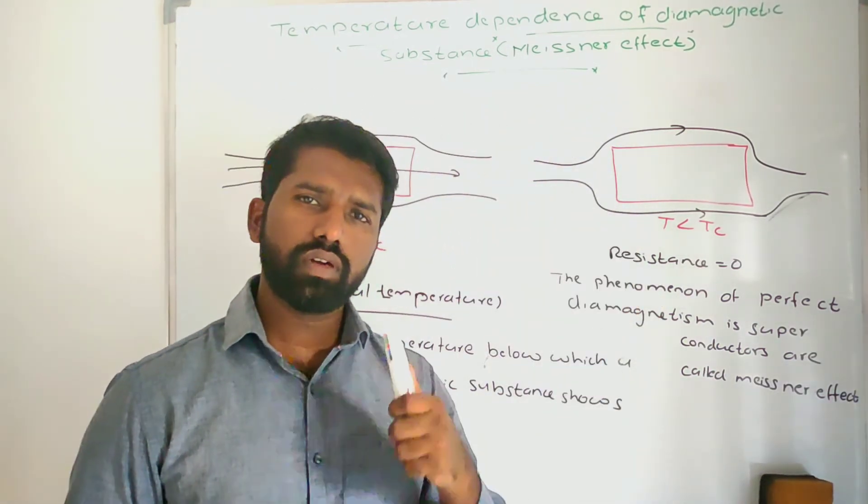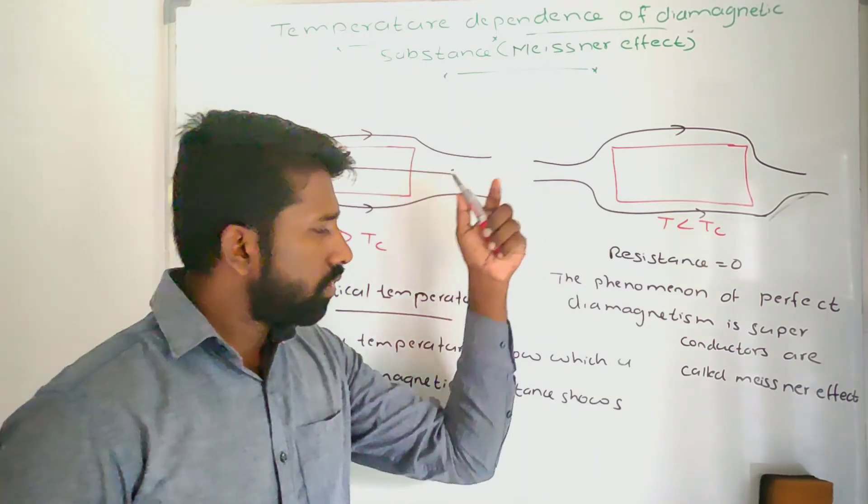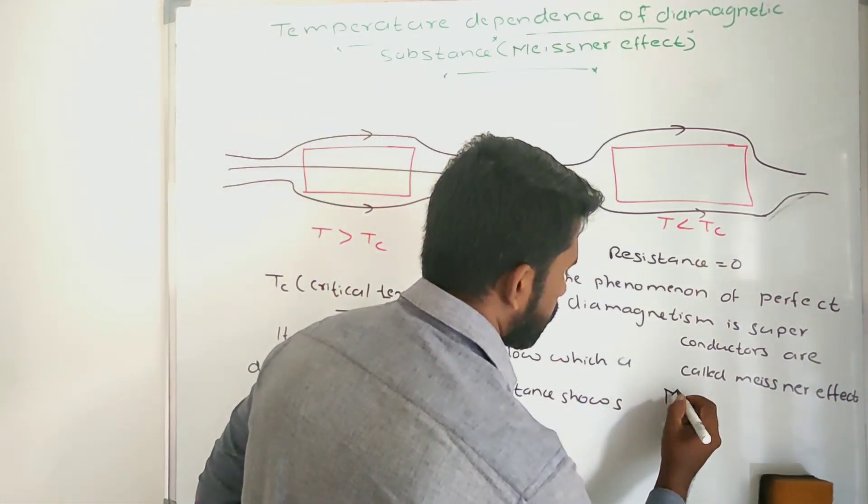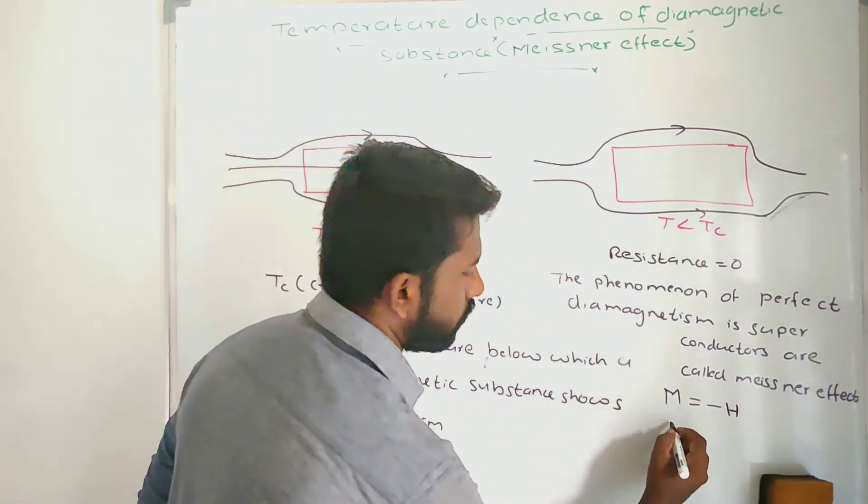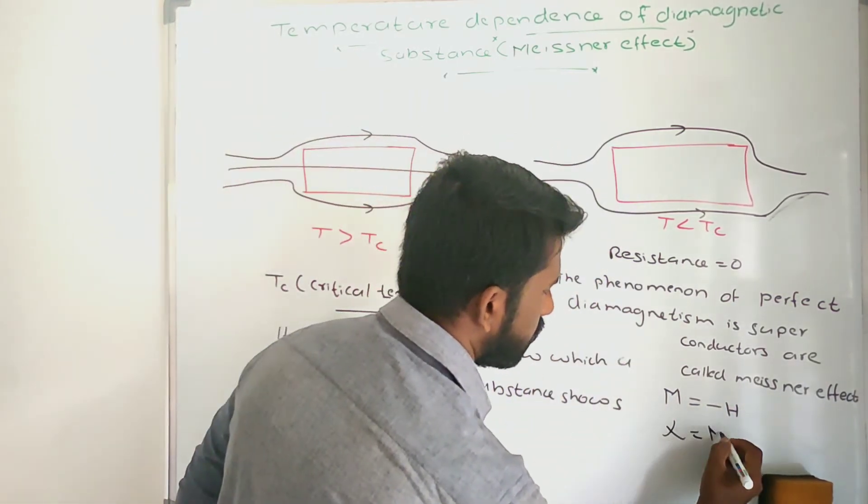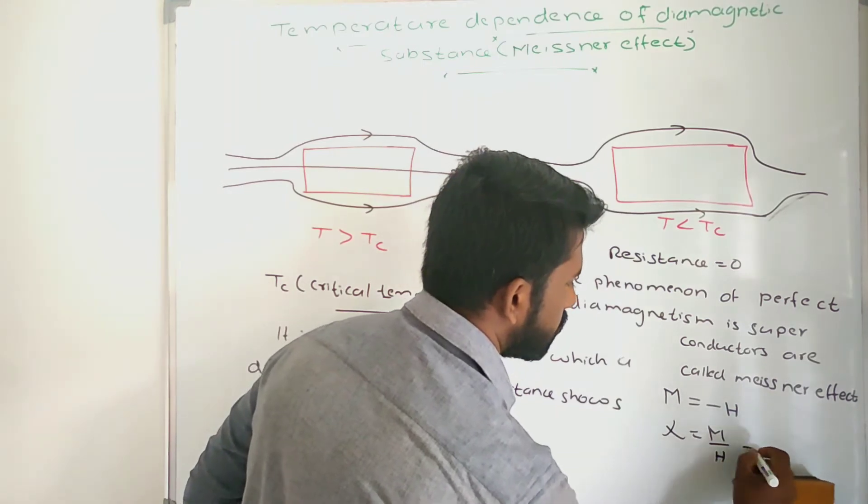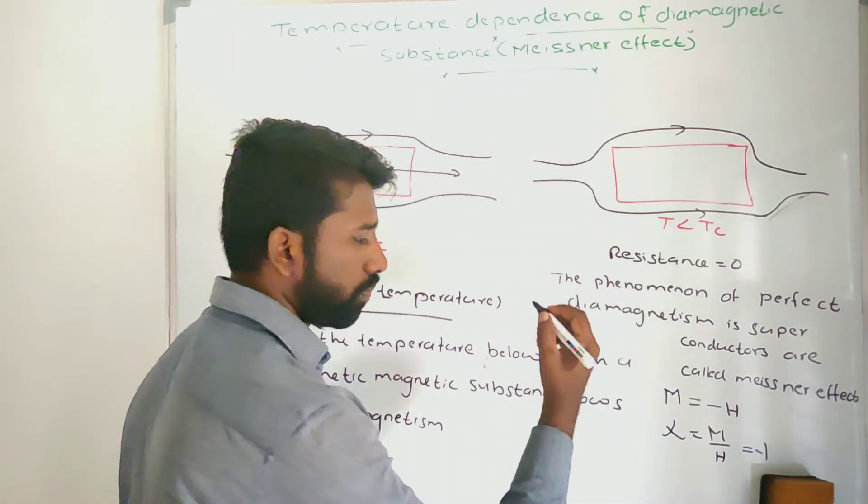At that time, what about the susceptibility? You see, the magnetization is nearly equal to the magnetic intensity. So the magnetic susceptibility is M by H, you will get minus 1, and the permeability...